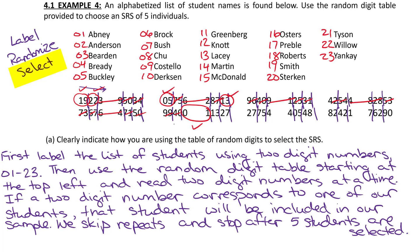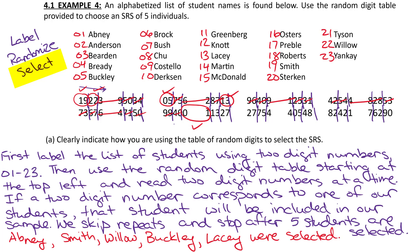The last part to finish the selecting step is to tell the reader which students these numbers actually correspond to. We go through our list and see: Abney was selected, Smith is number 19, number 22 is also selected, number 5 is Buckley, and number 13 is Lacey. You can circle them up above on the list and then also write them down below for part A.